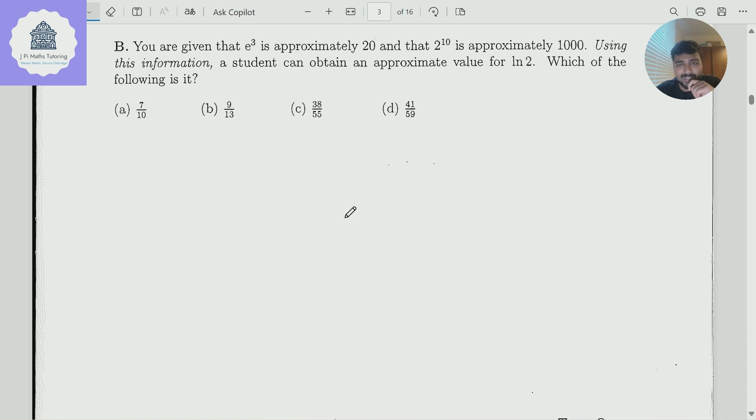Really interesting. Do give it a go. I'm going to dive right in. We're told that e cubed is approximately 20, and we also have that 2 to the 10 is approximately 1,000. We're trying to get something with ln2.